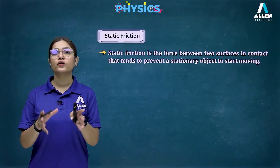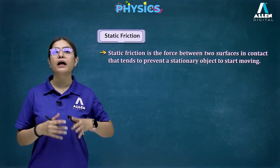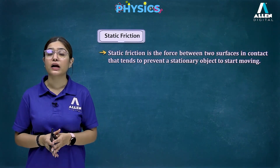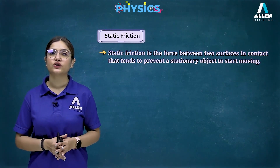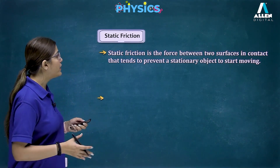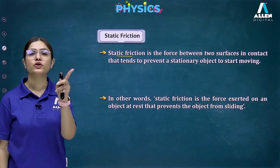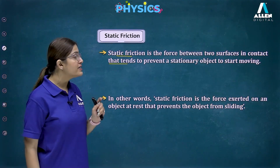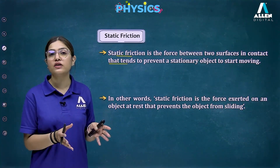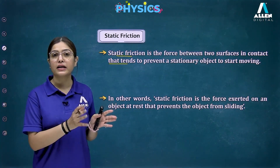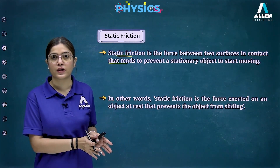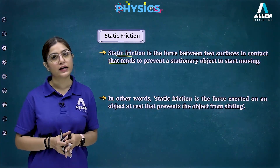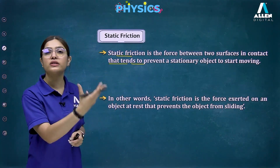First, we are going to talk about static friction. The word 'static' implies objects that are at rest. Static friction is the force between two surfaces in contact that tends to prevent a stationary object from starting to move. Friction is a contact force, so both surfaces must be in contact for it to act.